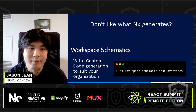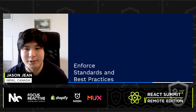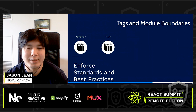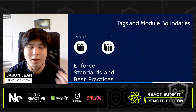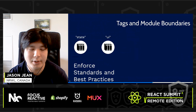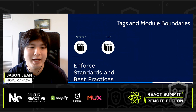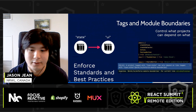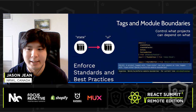NX also helps you enforce standards and best practices throughout your organization. A misconception about monorepos is that any library can depend on any other library, leading to a ball of mud. With NX, you can tag different projects — one tagged as 'state' and another as 'UI'. Since state should not depend on UI, if you make a dependency from state to UI, you get a linting error within your editor: a project tagged with 'state' can only depend on other 'state' projects.